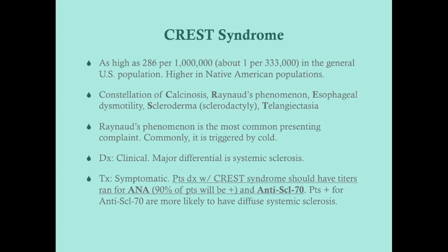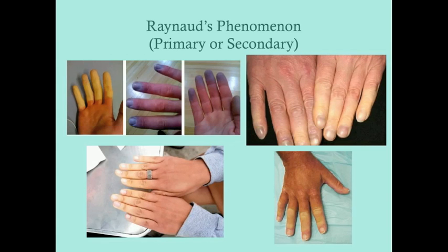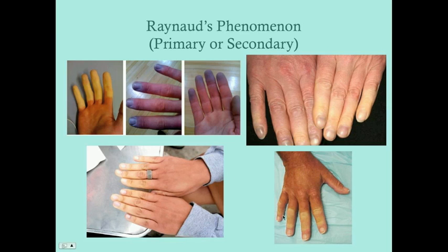Here is Raynaud's phenomenon — you can see why a person would be tempted to see their doctor. The most dramatic presentation is going outside in the cold and suddenly losing blood circulation to the fingers, which can also result in paresthesia as the fingers fall asleep from lack of perfusion. It can also present with a bluish coloration of the fingers, though that's a bit more rare, as visible in these images.